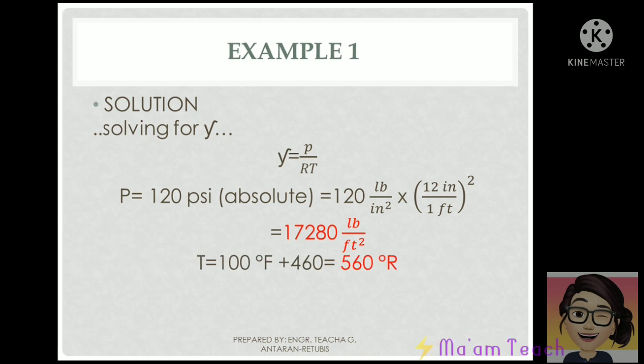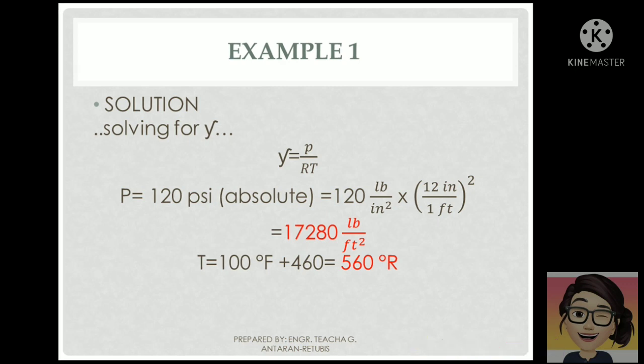For the temperature, recall that the absolute temperature should be in Rankine. Since our temperature is in degrees Fahrenheit, to convert Fahrenheit into Rankine, we add 460 to the given Fahrenheit. There you go, we have 560 degrees Rankine.